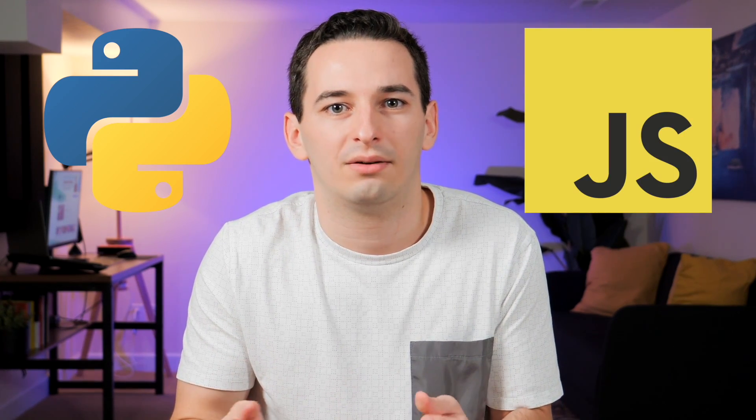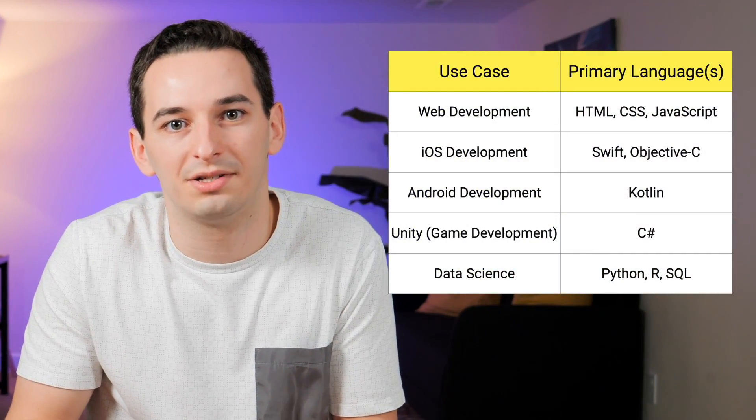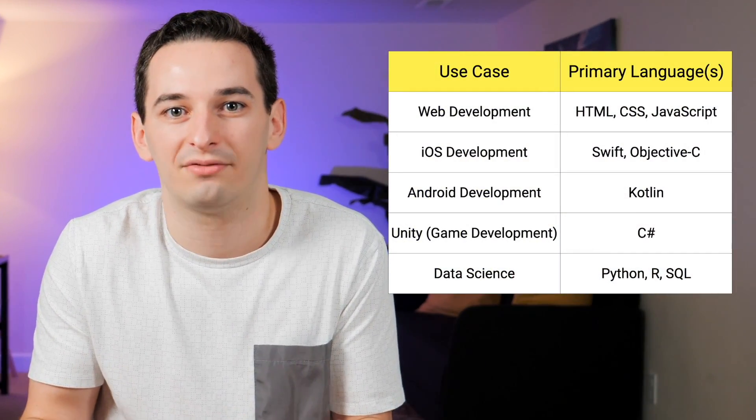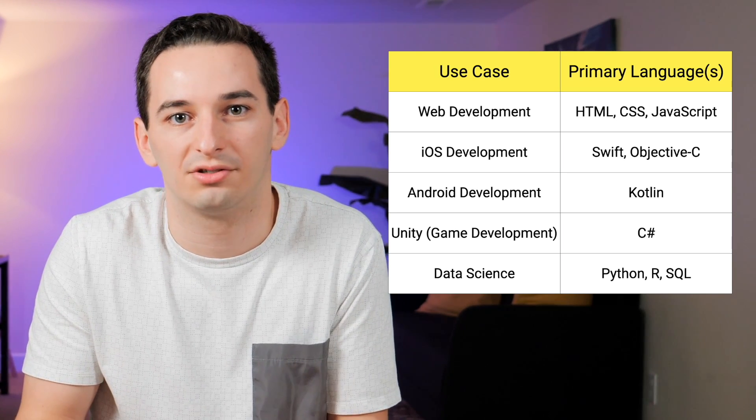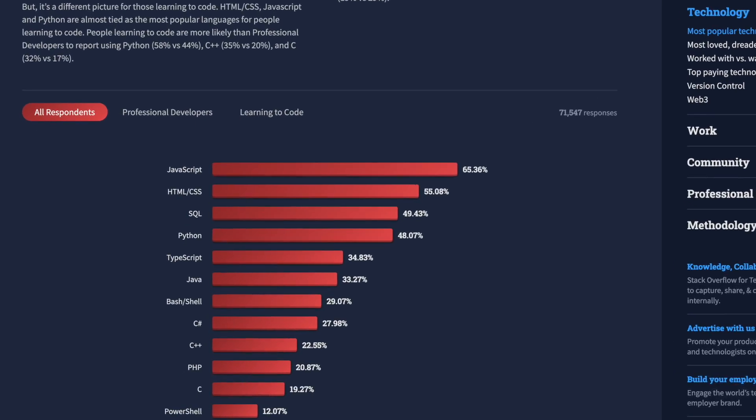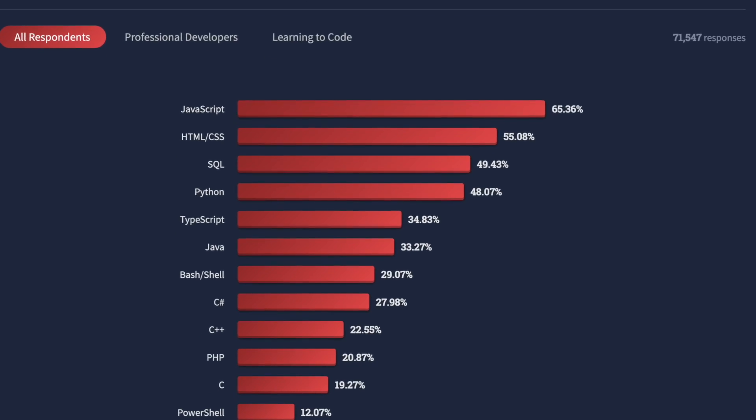It's also worth noting that some languages have to be used for certain types of applications. For example, if you want to make a website you pretty much have to use JavaScript because it's the only language that browsers widely support. For this video I'm going to use JavaScript because it's probably the most widely used language and thus the most practical, but most languages are more similar to each other than they are different, so it doesn't really matter which one you choose.